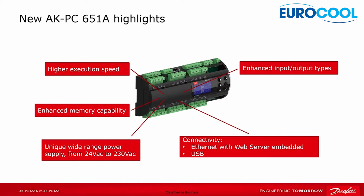We now have a wide range power supply: you can use from 24 VAC to 230 VAC, making it much easier to power on your controller. We've also enhanced the input/output types — all analog inputs now have noise filtering and accept PT1000 sensors, making installation more flexible. Additionally, we have added connectivity items; our controller now has Ethernet with an embedded web server where you can see pressures, temperatures, and images.